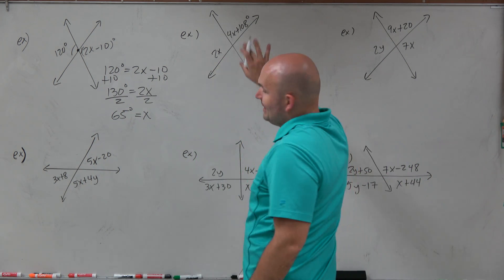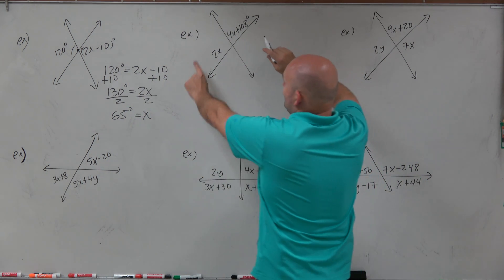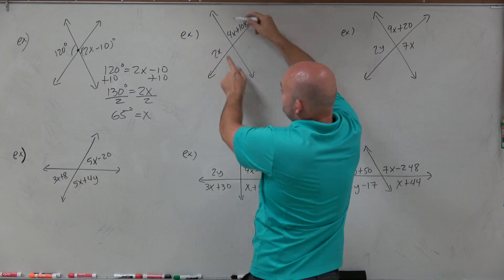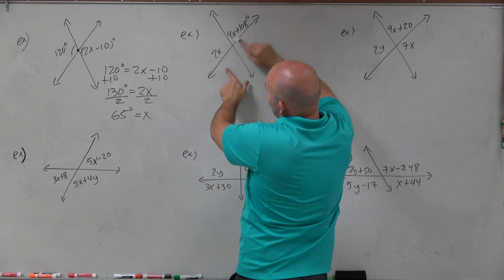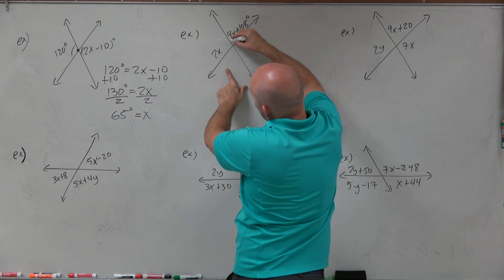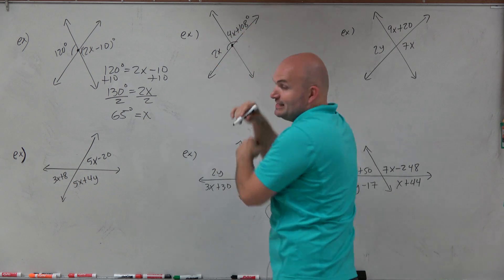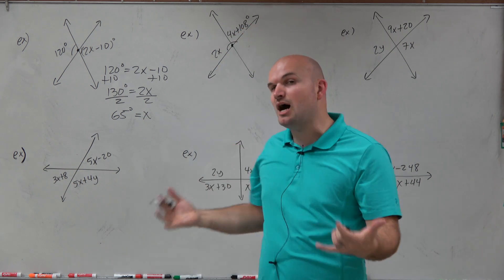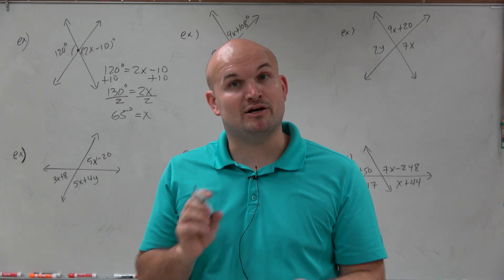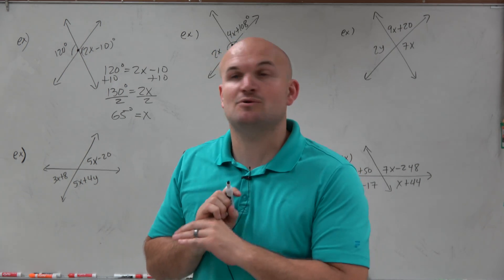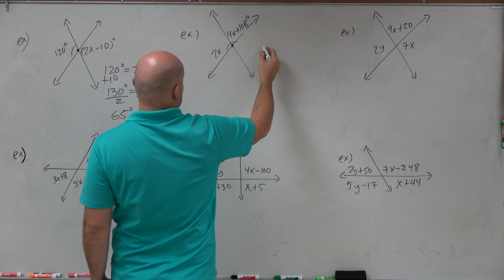In the next example, I again have intersecting angles. These two are vertical angles, and these two are vertical angles. But you can see these two angles lie across the same straight line and make up that straight line. Therefore they are supplementary, meaning they add up to 180. So I'm going to have a different expression in this case.